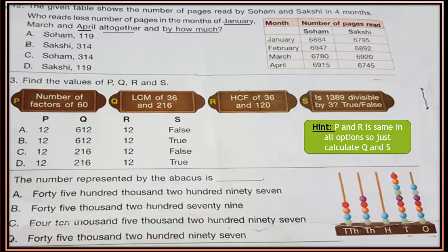Question 13: Find the value of P, Q, R and S. P is the number of factors of 60. Q is the LCM of 36 and 216. R is the HCF of 36 and 120. S: is 1389 divisible by 3? True or false. Calculate the values of P, Q, R and S and then choose the correct option.